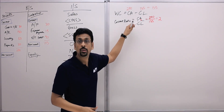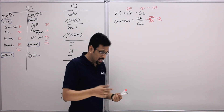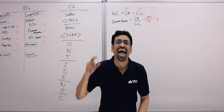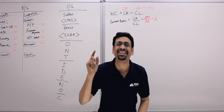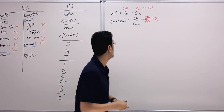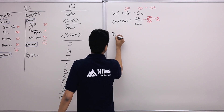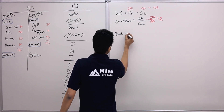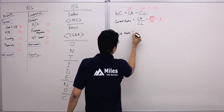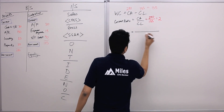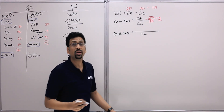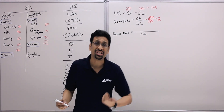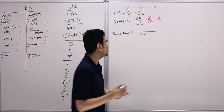Now we look at another ratio called the quick ratio or acid test ratio. For the quick ratio, the denominator remains current liabilities, but the numerator is cash plus marketable securities plus accounts receivable.